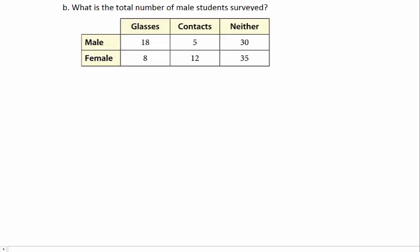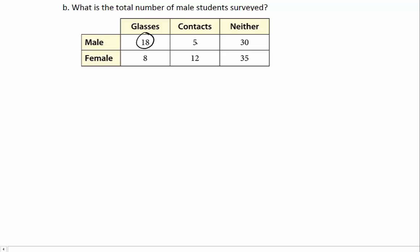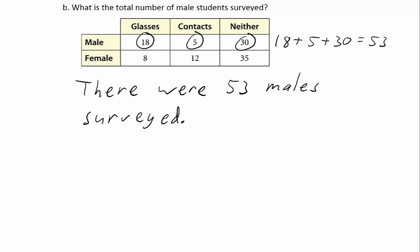Question B: What is the total number of male students surveyed? Here we're going to calculate what's called a marginal total. Just like the margin of a book is the part around the outside of the main portion, the margin of a two-way table is the totals we can calculate that are outside of the regular part of the table. To figure out the total number of male students, we add the males that wear glasses, the males that wear contacts, and the males that wear neither. We see there were 53 males surveyed.